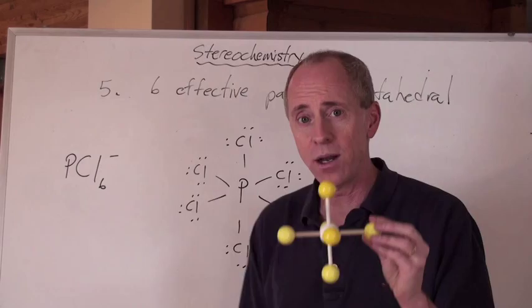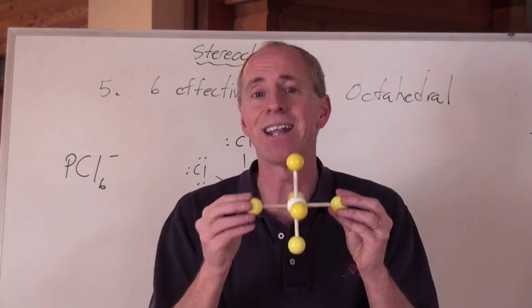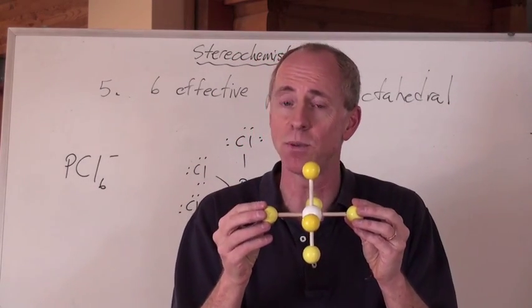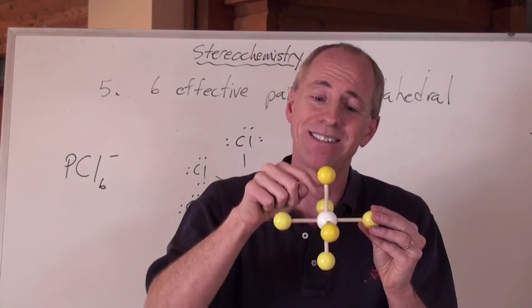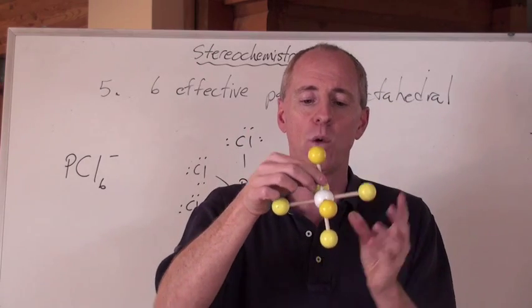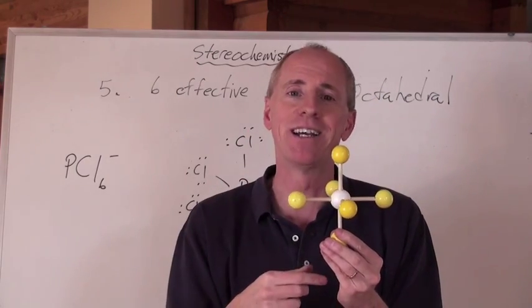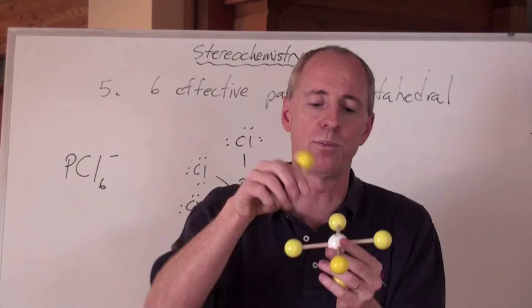Now, I won't do all the other Lewis diagrams for this, but what I'm going to show you is that's an arrangement, right? It's a seed arrangement. What would happen if you actually had a lone pair here somewhere as an effective pair instead of a bond? Well, where would you put it? Well, it doesn't matter, because everything's 90 degrees away from each other, so put the lone pair up there.